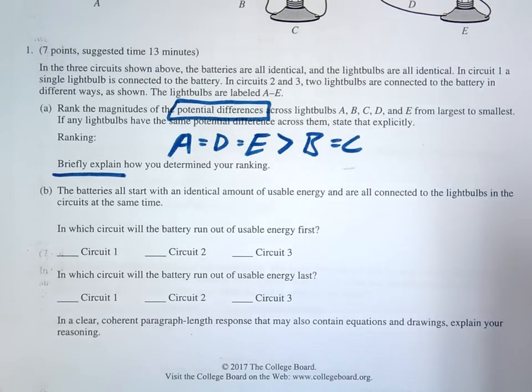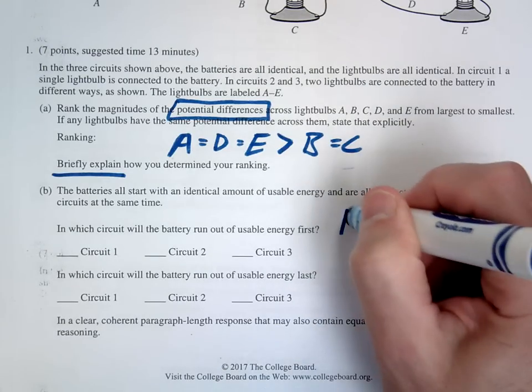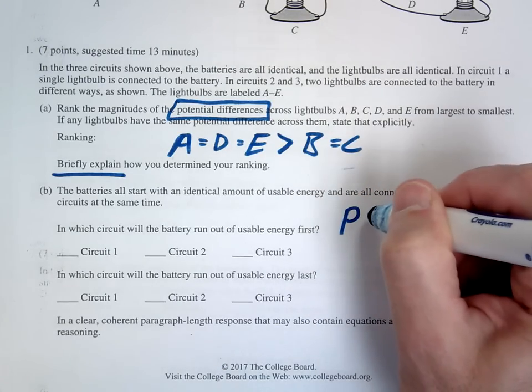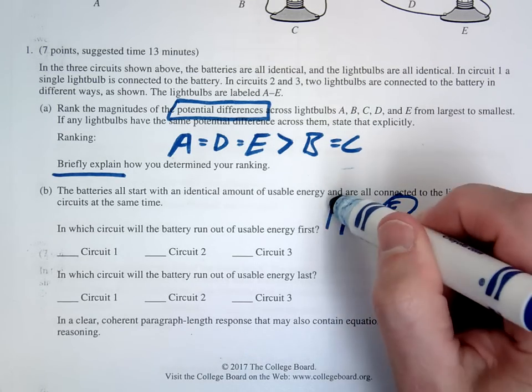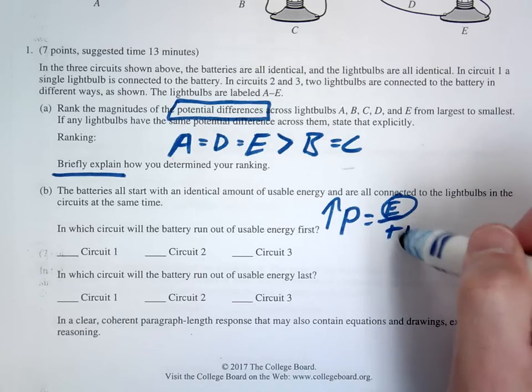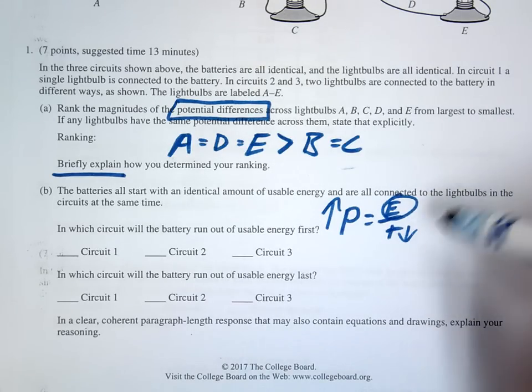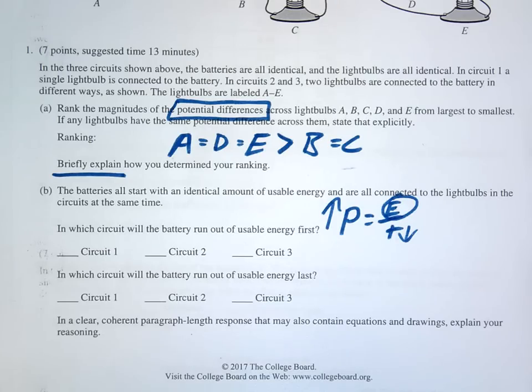Okay, so the key for this is thinking about power, right? So power remember is energy over time. So if they all have the same energies, whichever one has the most power is going to have the least amount of time or it's going to run out of energy first. Okay, so that's what you're going to want to look at, which one has the most power.